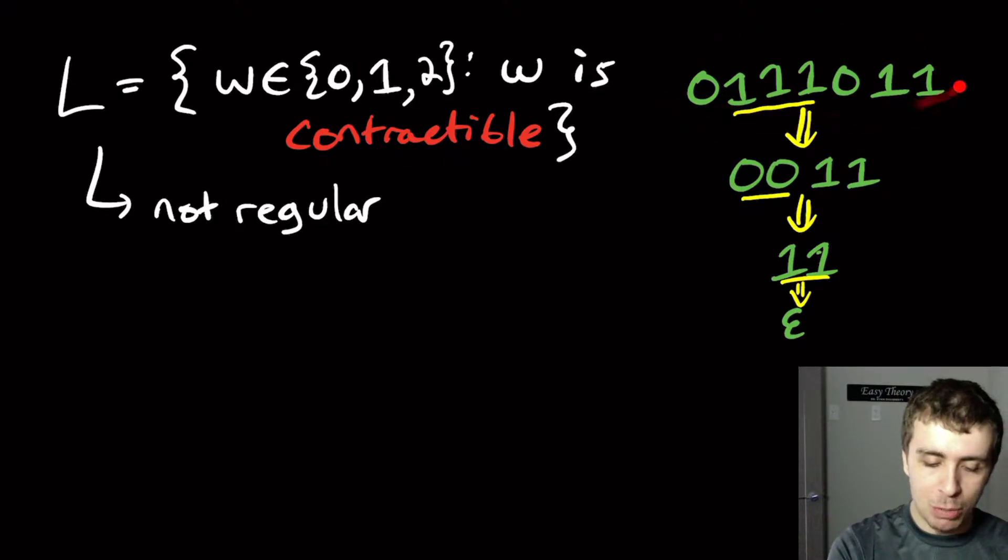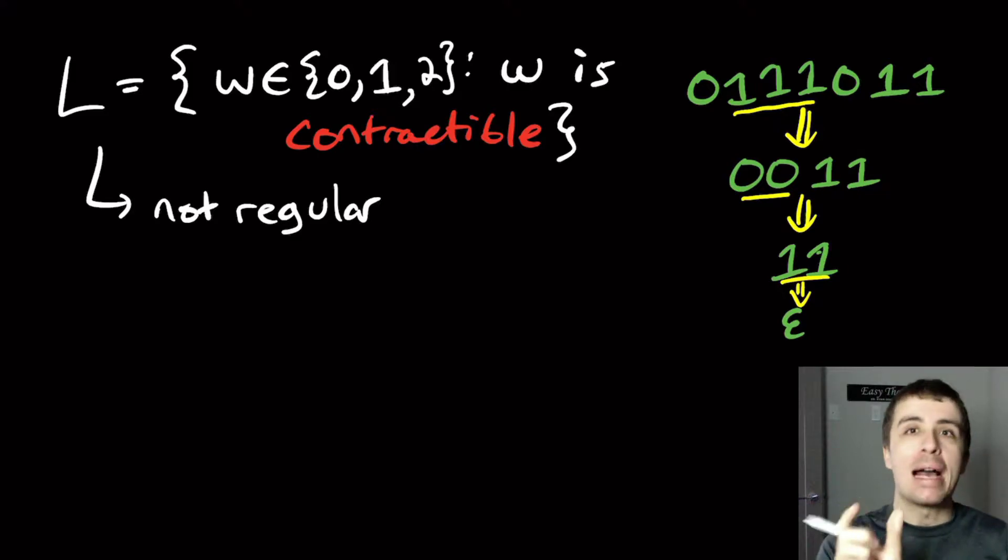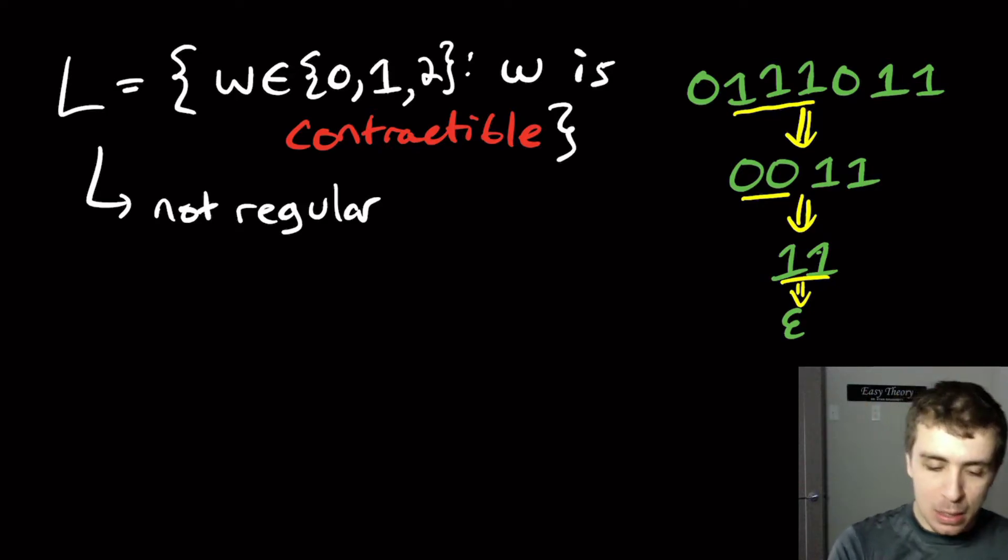So let me give you an example. So we have this string 0110011. And contractible means that we're going to take a substring of two or more of the same character, and then delete that whole string. So we'll find a maximal substring of the same character, and we'll delete it repeatedly, not necessarily the same every time.